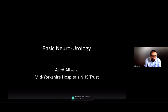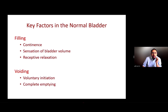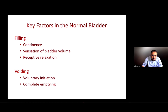You have indeed given me a challenge to try and cover this topic in 15 minutes. When we're talking about the key factors in the function of the normal bladder, there are two components: filling and voiding. Filling involves continence, sensation of bladder volume, and receptive relaxation — as the bladder fills it should relax to keep us at constant pressure. Voiding involves voluntary initiation and complete emptying.